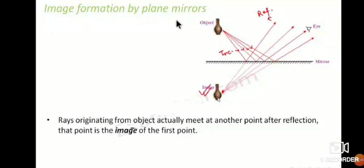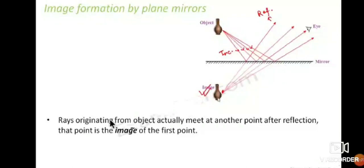Image formation by plane mirrors — how is the image formed by a plane mirror? When rays fall on the mirror from an object, the rays originating from the object actually meet at another point after reflection. That point is the image of the first point, and that image is visible to your eye.